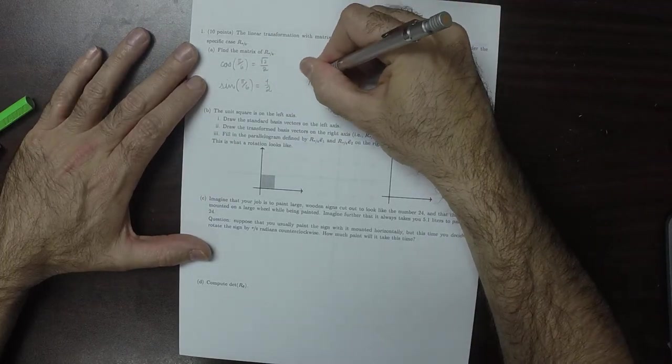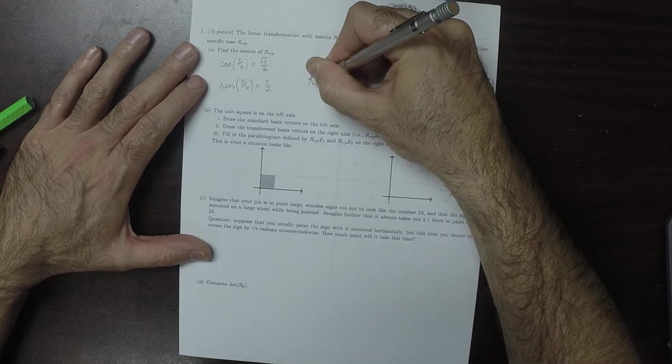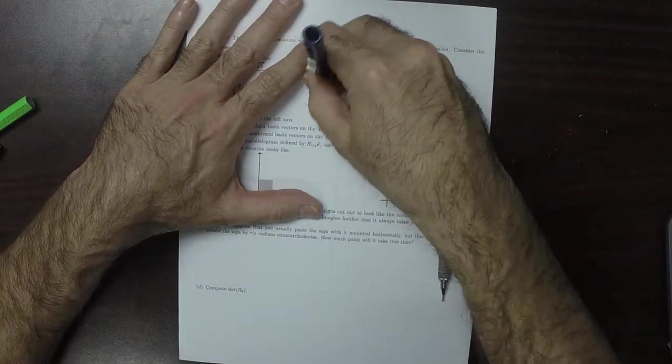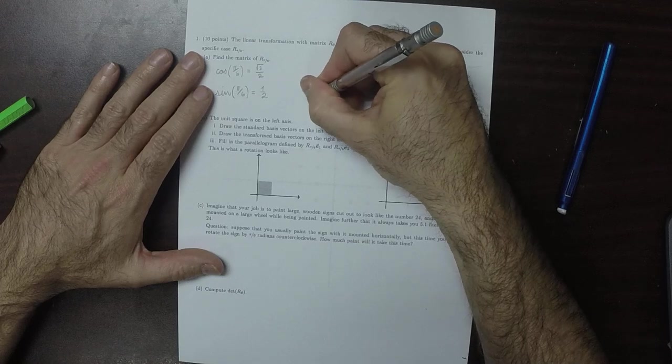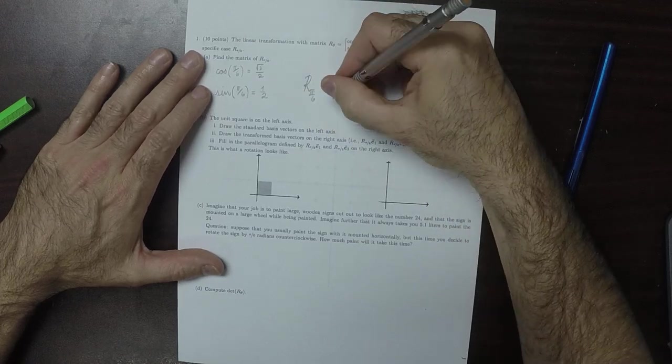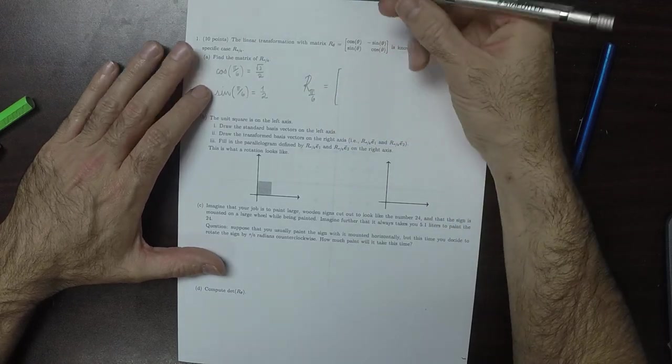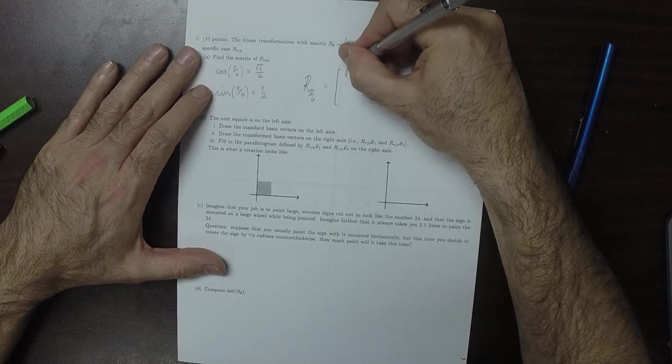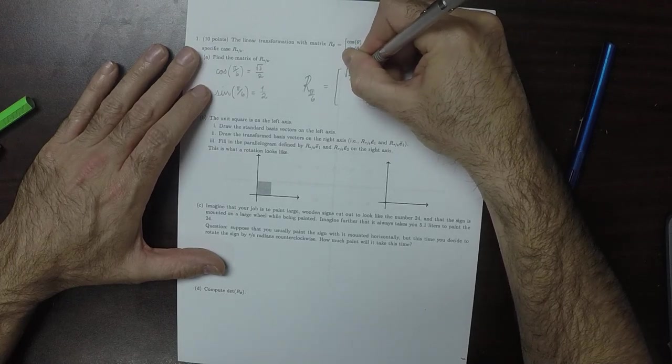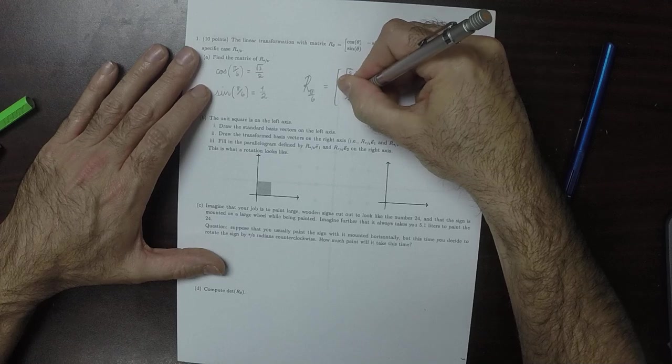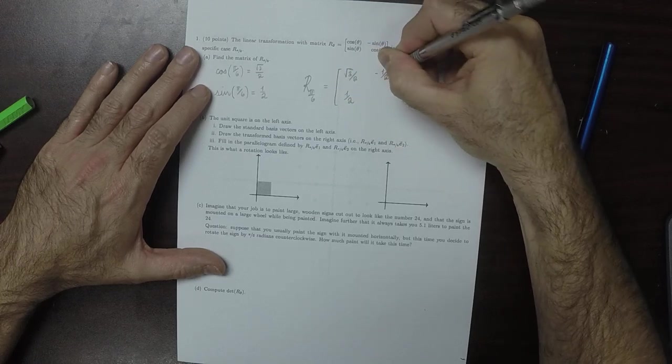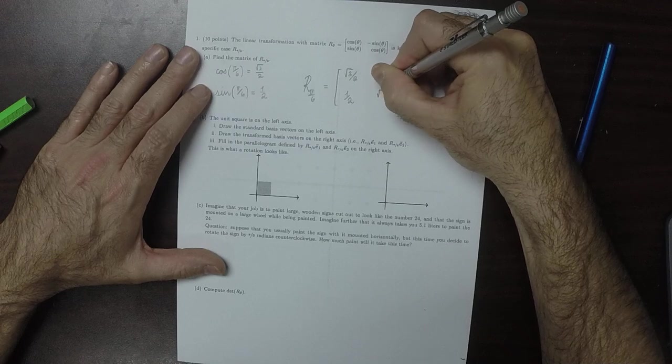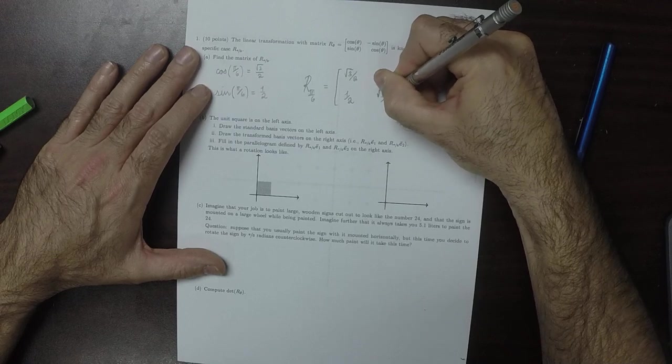As a result, r pi over 6 is square root 3 over 2, half, negative half, square root 3 over 2.